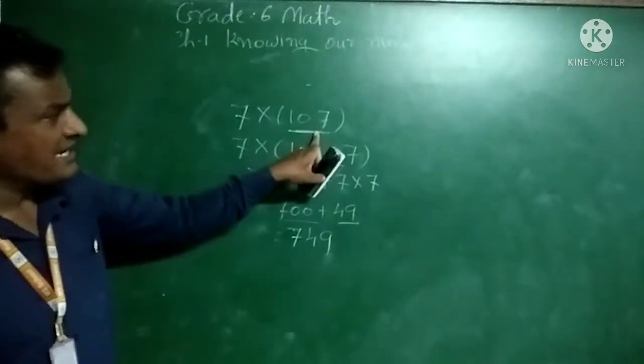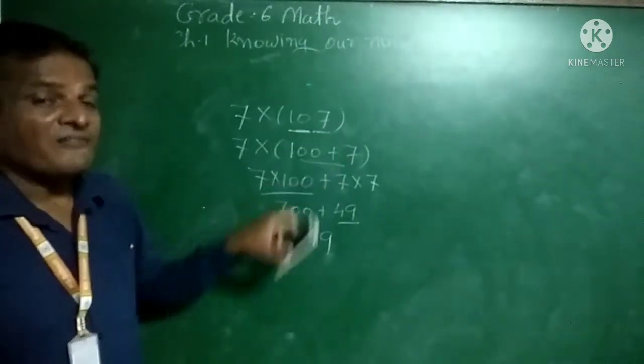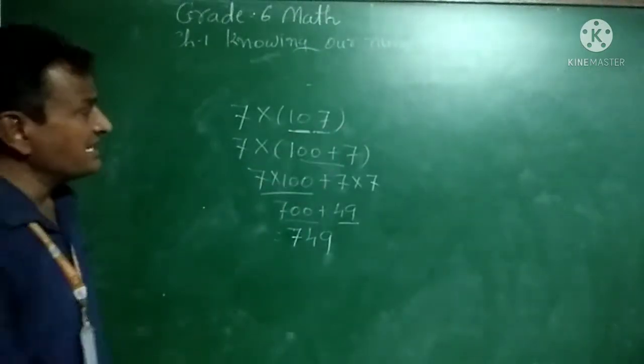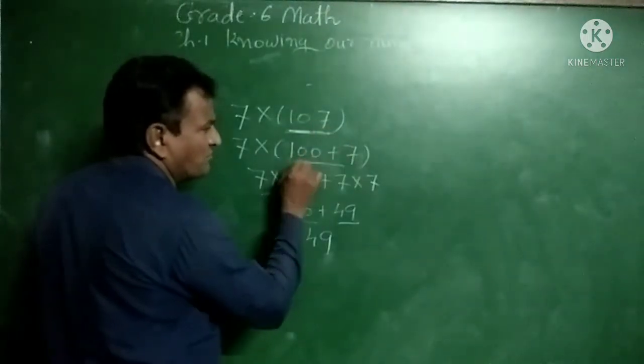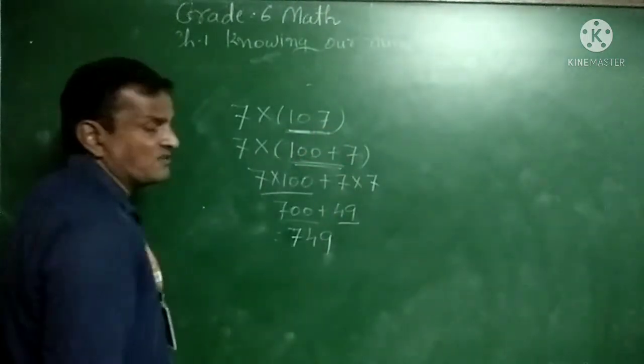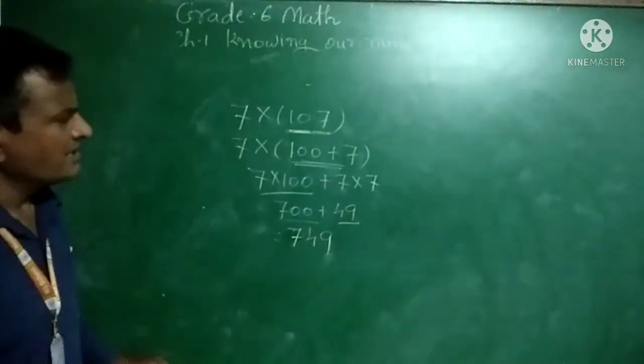Understand how we write 107 this way — when the number is close to a rounding number, we use this type of operation.